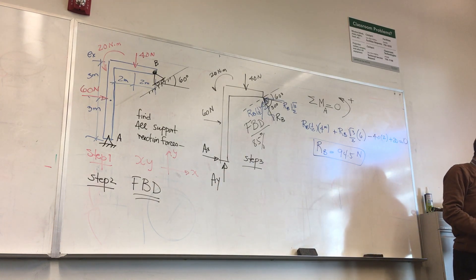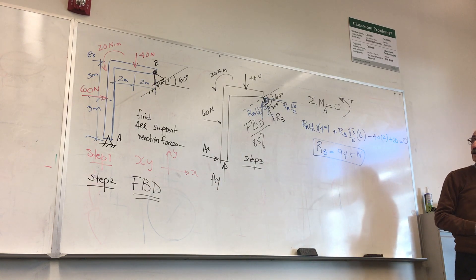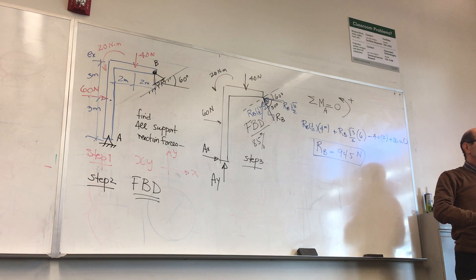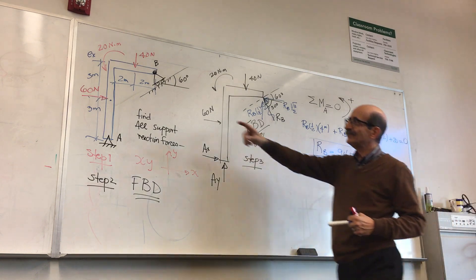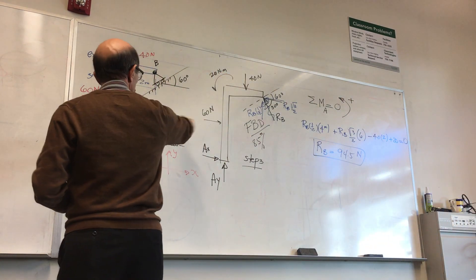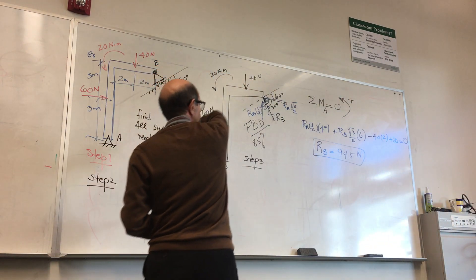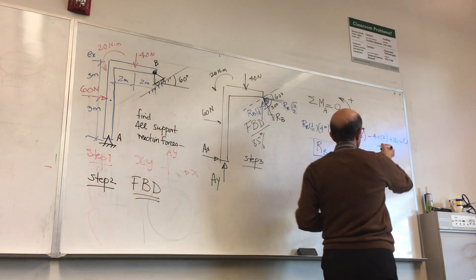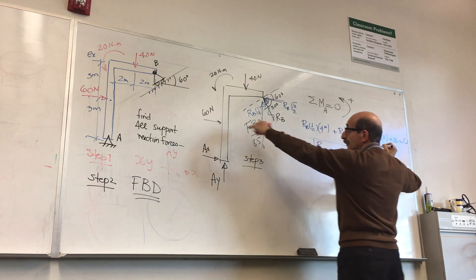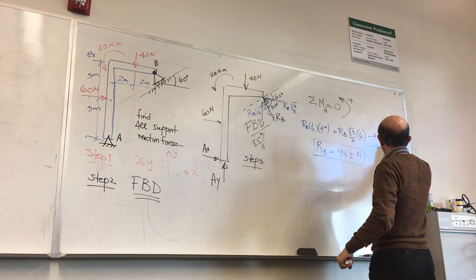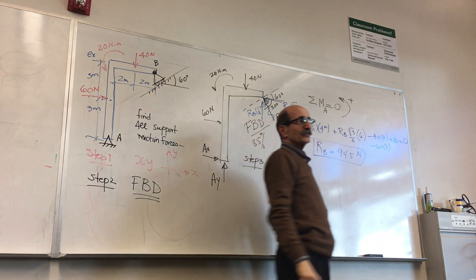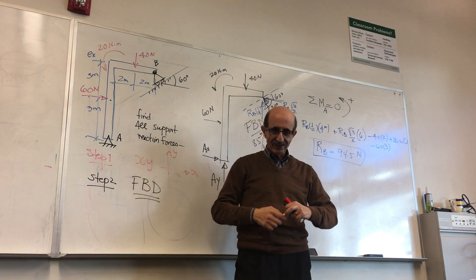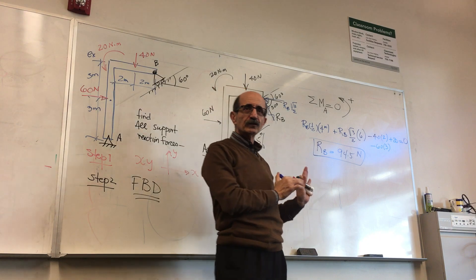A student points out the 60-Newton force was initially omitted from the moment equation — shame on me! That force also rotates clockwise, so it would be negative 60 times a distance of 3. Since the answer was already computed with it included implicitly, the answer doesn't change. Any questions about that part?